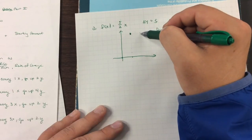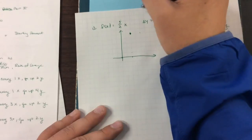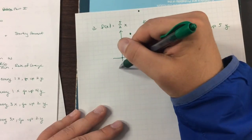From here, I'll go over 2 and up 5. And this will give me my points right here.